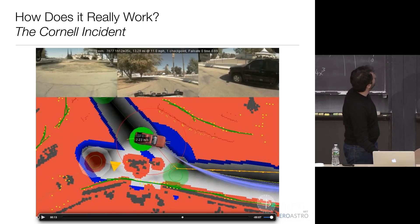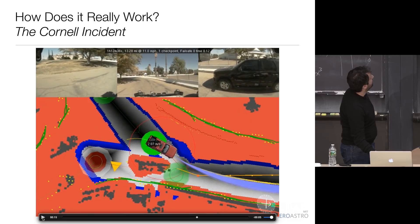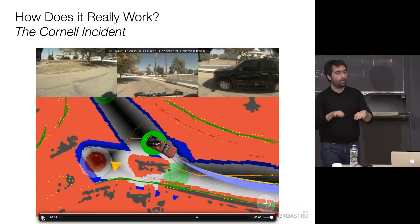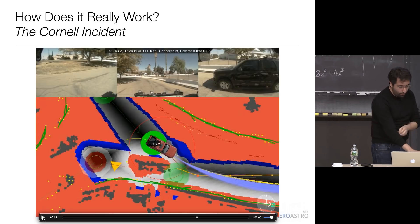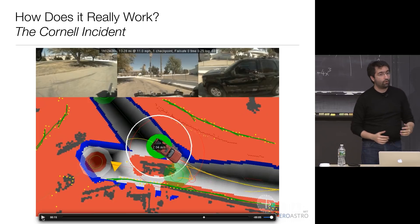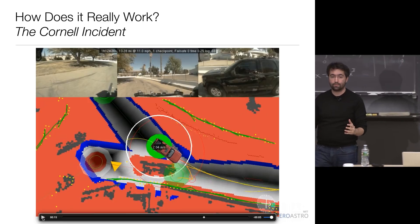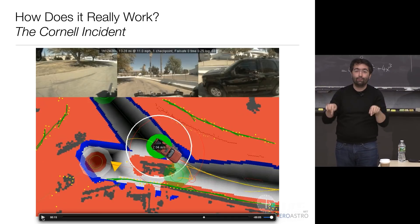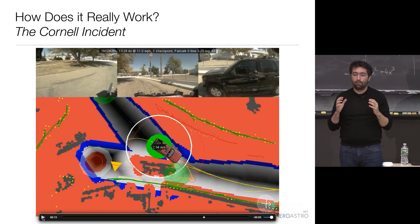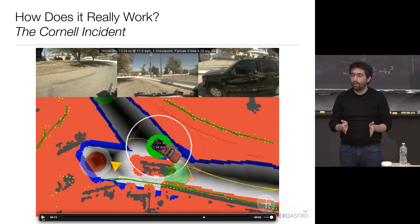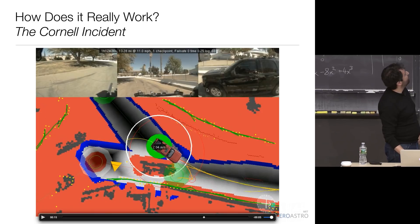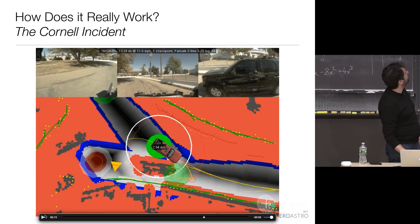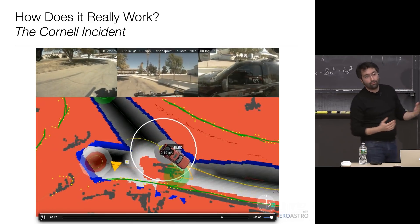If our car at some point realizes there are no valid paths and a collision is imminent, it shows a white circle — meaning we are headed to a crash and there's nothing to do about it. We just slam the brakes and hope not too bad things happen. So the collision happens — we collide with the car. DARPA pulled the Cornell car back, started us again, and we finished. They finished as well, so both teams completed the race.